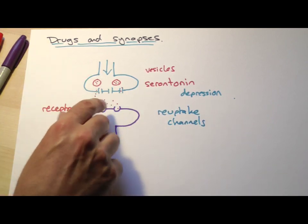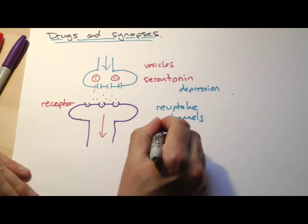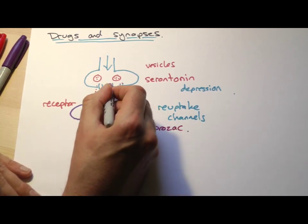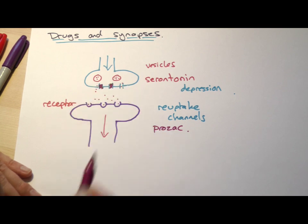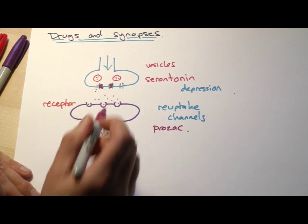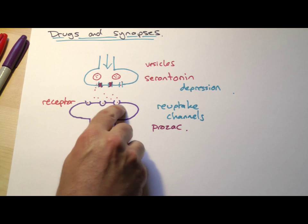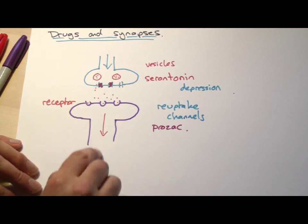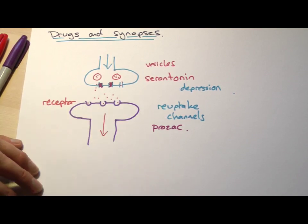What drugs like Prozac do is they block off those channels so that the serotonin can't get back through, and it leads to a buildup of serotonin in here, more chance of them filling these receptor sites, and so we get more of these nerve impulses going on.